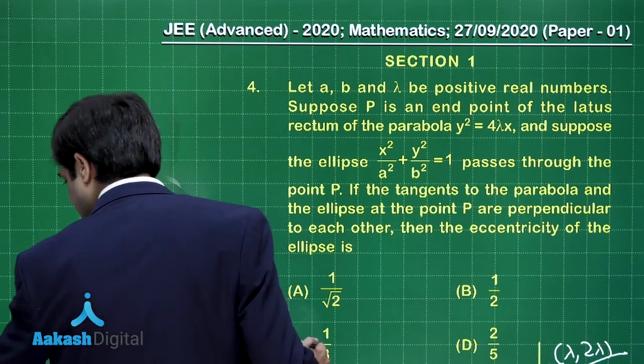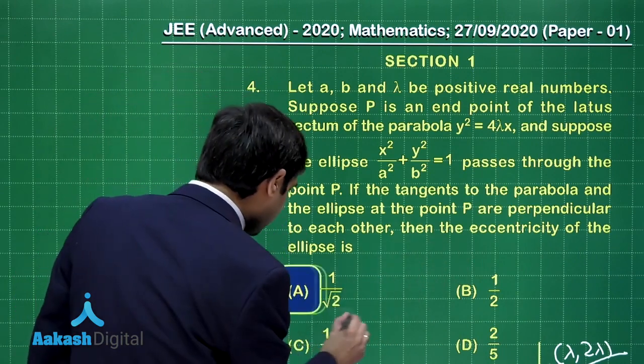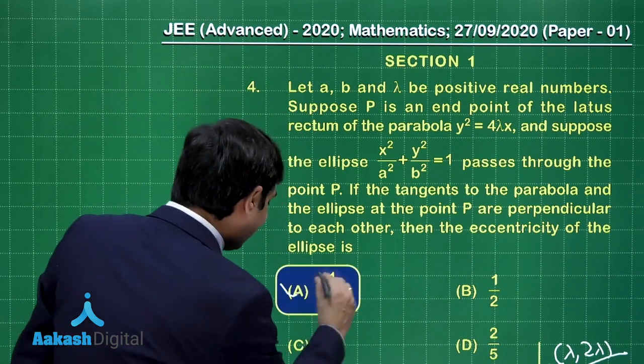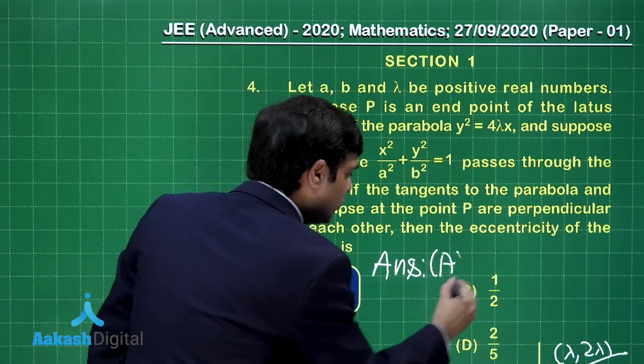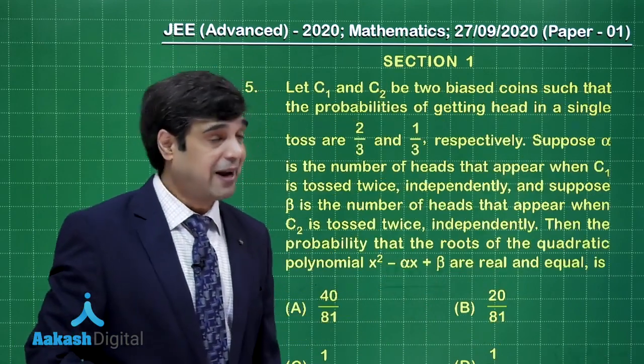Time to check from the given options. So we can see here option number A contains the same result that is 1 by root 2. So I am sure this question is also clear. Time to take up question number 5.